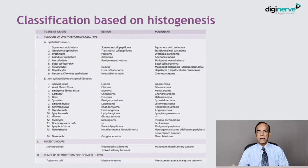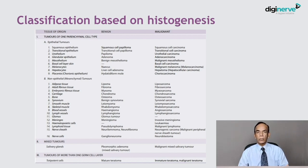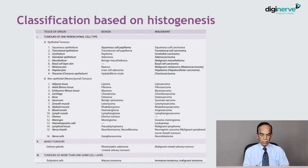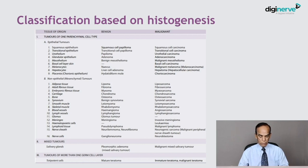Continuing the mesenchymal classification: synovioma (benign) and synovial sarcoma (malignant) for synovial tumors; leiomyoma and leiomyosarcoma for smooth muscle; rhabdomyoma and rhabdomyosarcoma for skeletal muscle; hemangioma and angiosarcoma or hemangiosarcoma for blood vessels; lymphangioma and lymphangiosarcoma for lymph vessels; glomus tumor (benign) and glomangiosarcoma (malignant) from glomus cells; meninges give rise to meningioma, with invasive meningioma as the malignant counterpart.